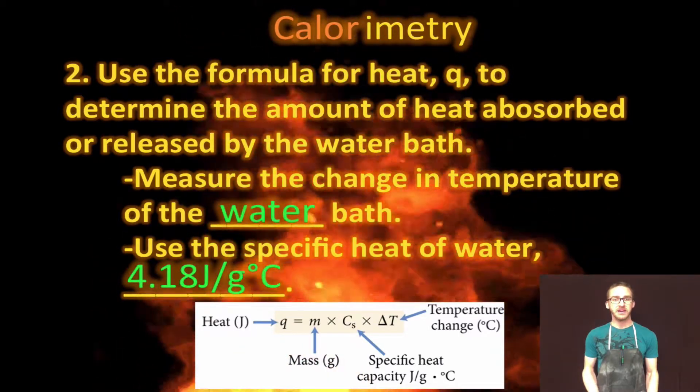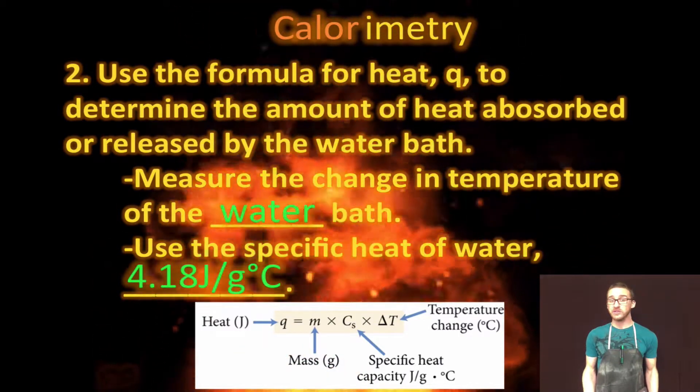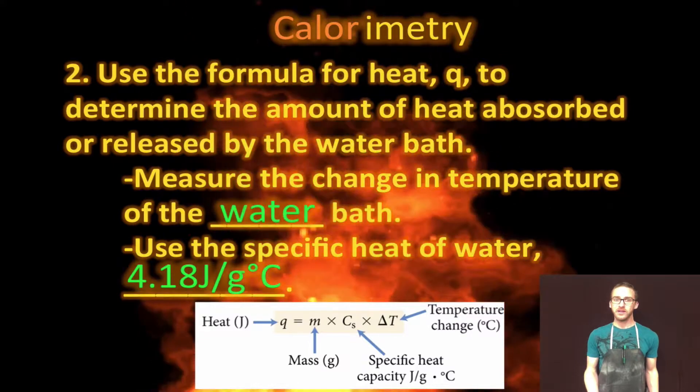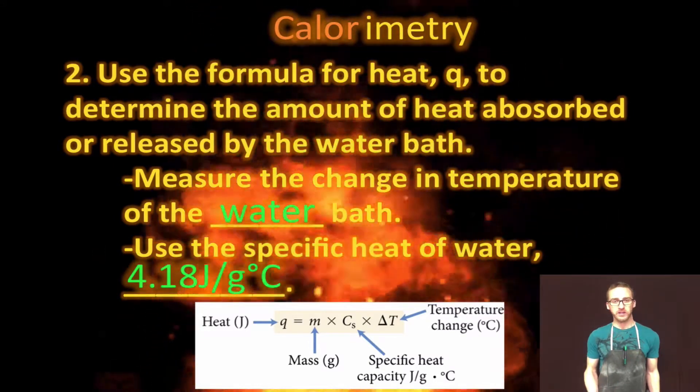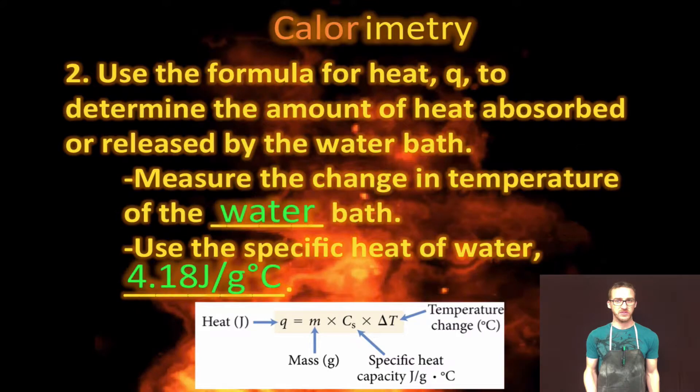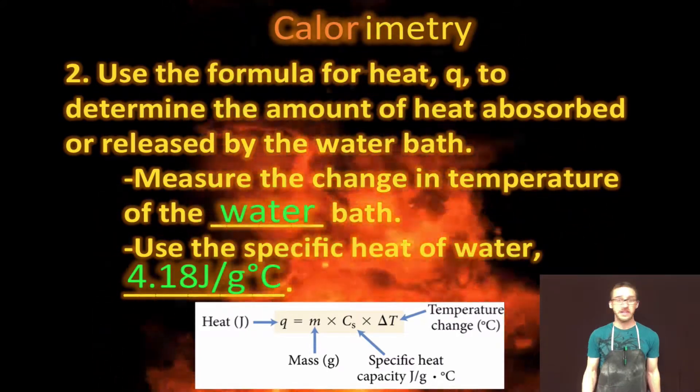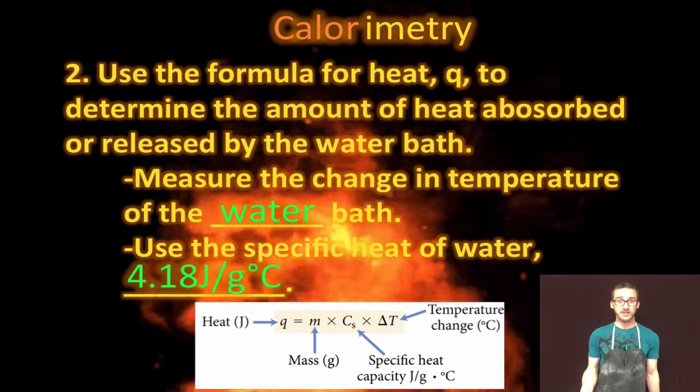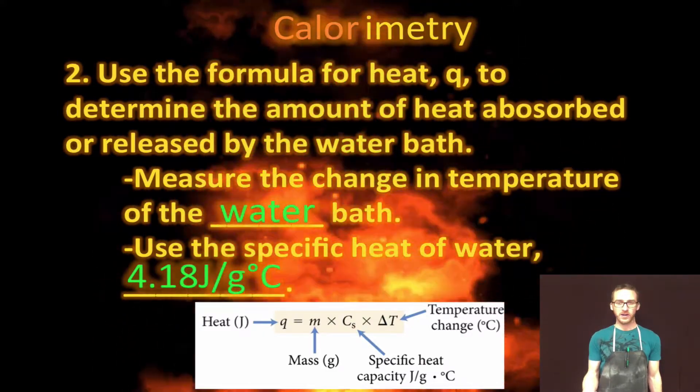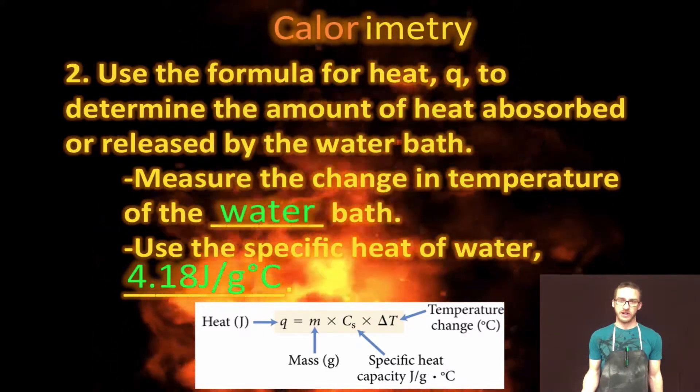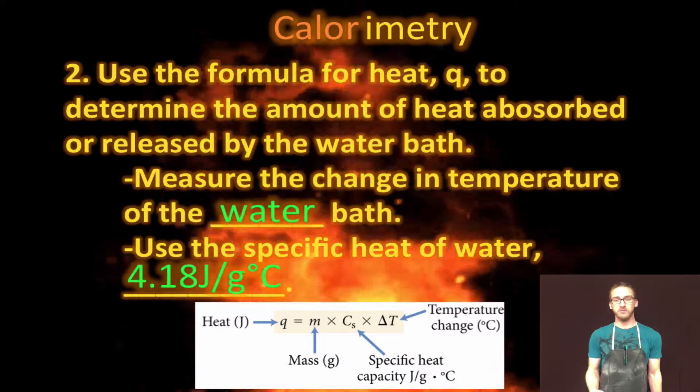And that's important because we can then measure the change in temperature of the water bath and we know the specific heat of water to be 4.18 joules per gram degrees Celsius. So it makes solving the formula for heat pretty easy. I mean take a look at that formula. We'll know the mass, we know the specific heat of water, and then we can measure the temperature change to determine the amount of heat absorbed or released.